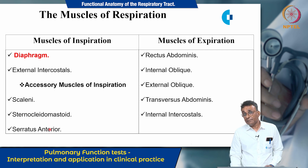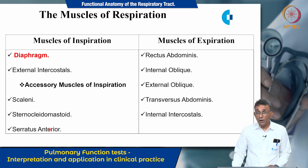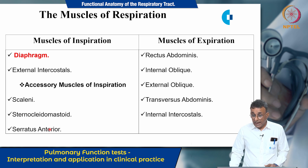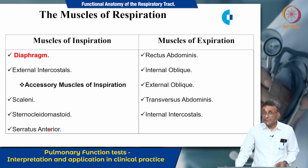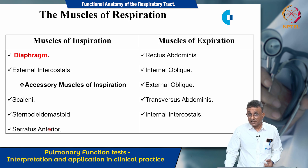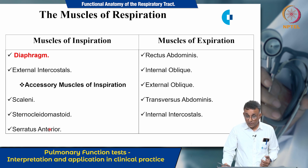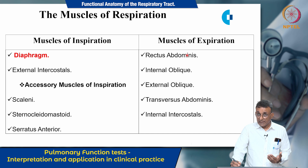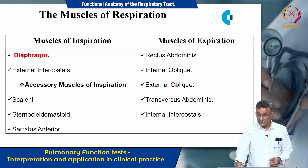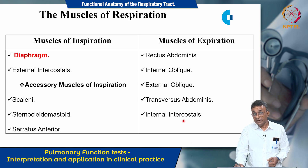Expiration is normally a passive phenomenon depending on the elastic recoil of the lungs. However, during states of stress such as exercise, expiration does require muscular effort. The muscles contributing to expiration during stress include the rectus abdominis, internal oblique, external oblique, transversus abdominis, and the internal intercostals.